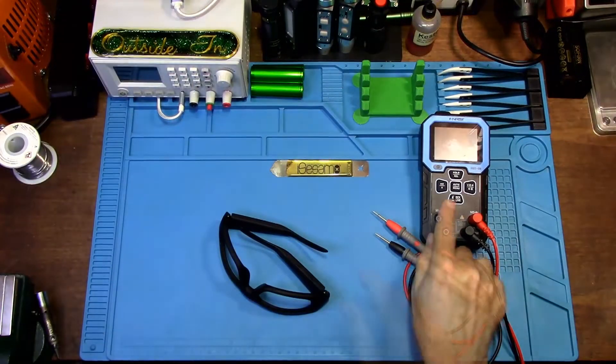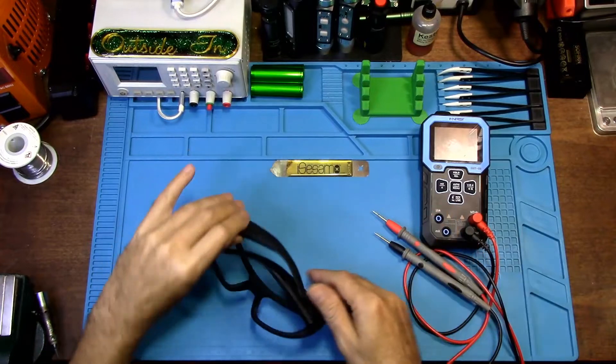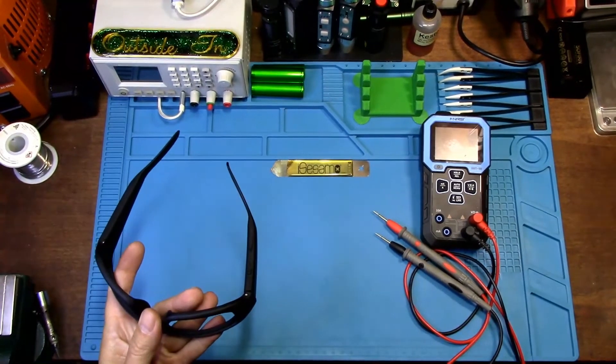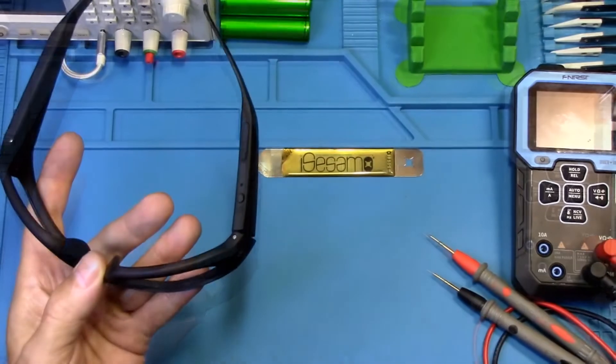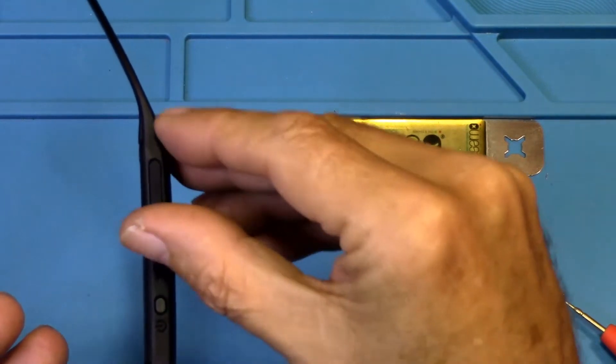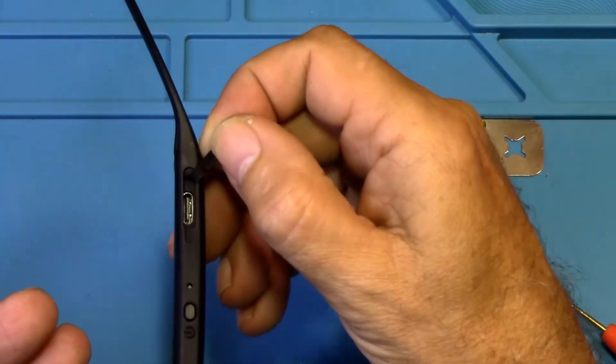All right, here we are. You'll see in a minute why I have my multimeter sitting out here. Let's zoom in here so we can see better. This right here is where you plug in your USB cord to plug it into the computer and to charge it.